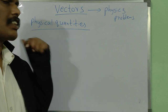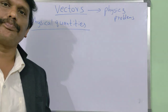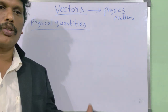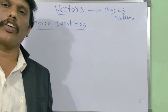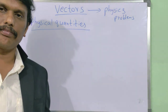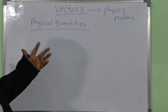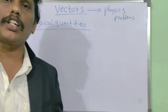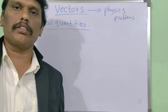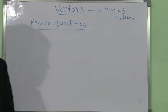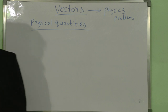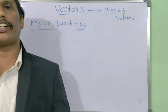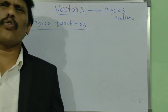All the physical quantities in physics are divided into two groups. One group is called vectors and another group we call scalars. First of all, what are physical quantities? The quantities which can be measurable are known as physical quantities.